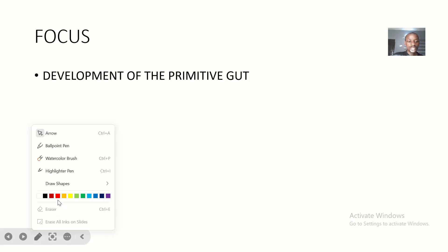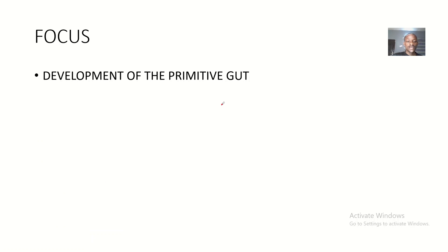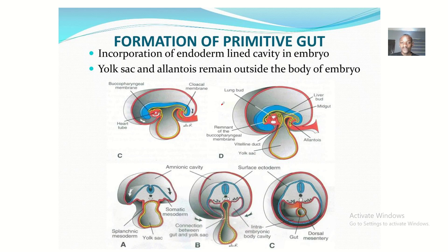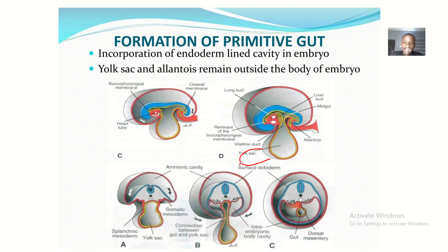Today we'll be talking about embryology — specifically the development of the primitive gut. The primitive gut is basically forming from the yolk sac and the endoderm.